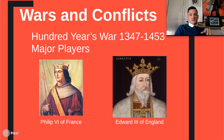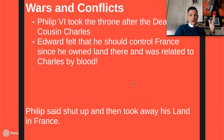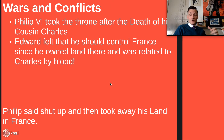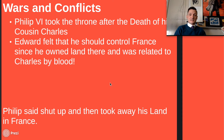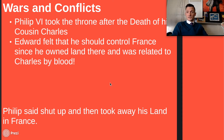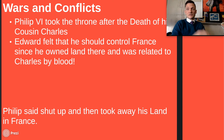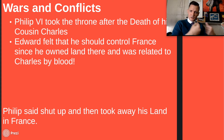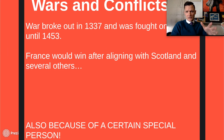From 1337 to 1453, the major players were Philip VI of France and Edward III of England. Philip took the throne after the death of Charles IV, and Edward felt he should control France since he owned land there and was related to Charles by blood. But Philip told him to shut his mouth and actually took away his land in France, and this spiraled into an international war. A grudge built up between the English and the French starting in 1337 that didn't end until 1914, when they allied to fight the Germans.